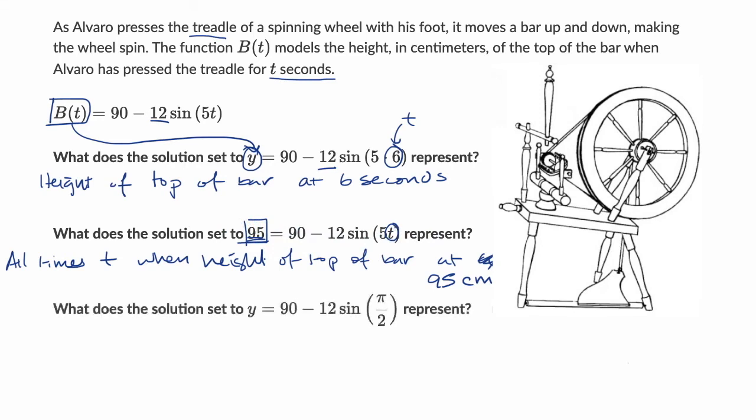Now we have another question. This one is asking us, what does the solution set to y equals 90 minus 12 sine of pi over 2 represent? Pause the video and think about that.